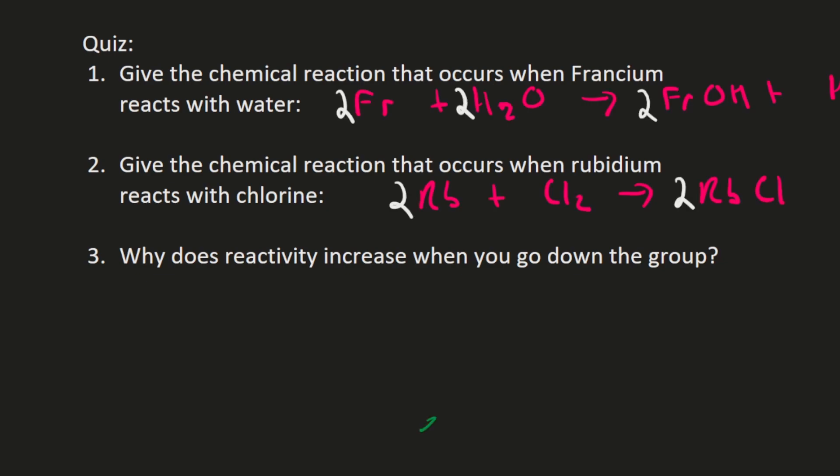Welcome back. These are the answers for the quiz questions. Give the chemical reaction that occurs when francium reacts with water: francium plus water goes to francium hydroxide plus hydrogen, and you need to balance it out just like that. Give the chemical reaction when rubidium reacts with chlorine: rubidium plus chlorine goes to rubidium chloride, and you balance it out like that. It's the exact same thing as we saw previously, just substituting in a different metal.